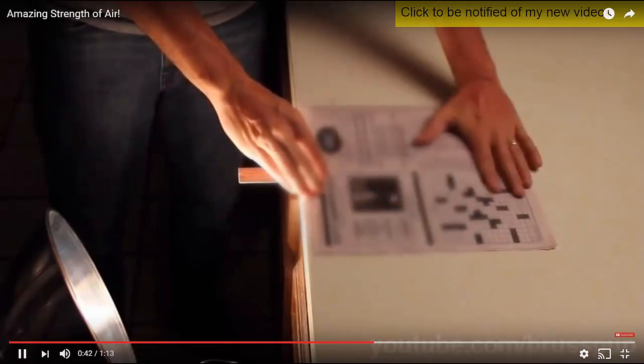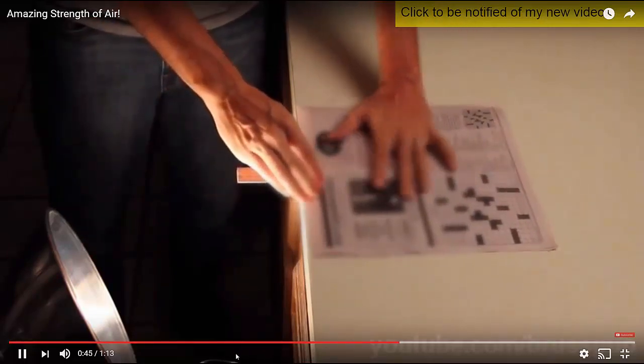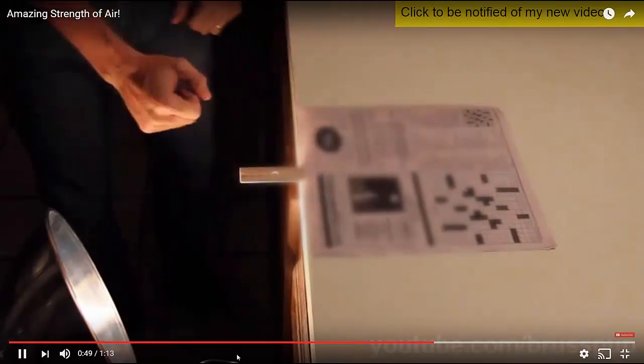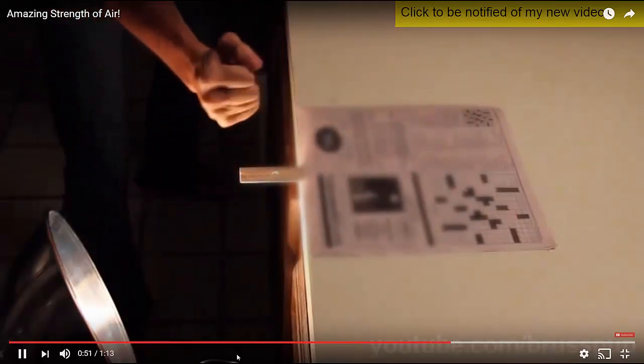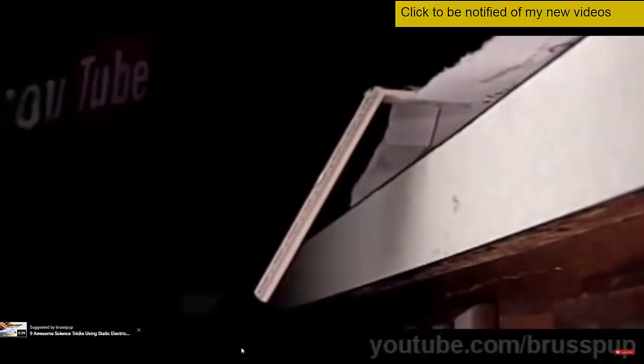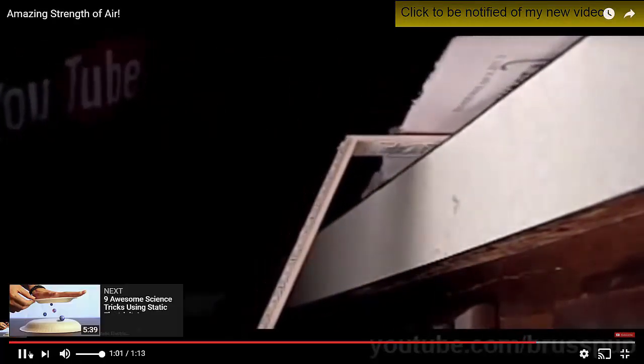Notice that it smooths the newspaper over the ruler and breaks it. The newspaper is able to hold the ruler in its place.